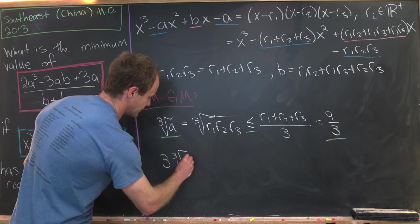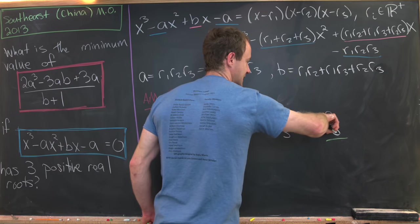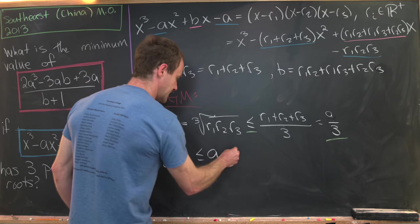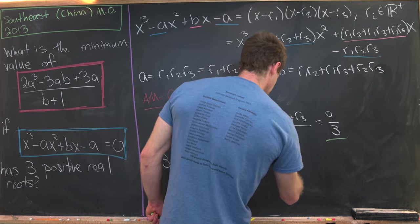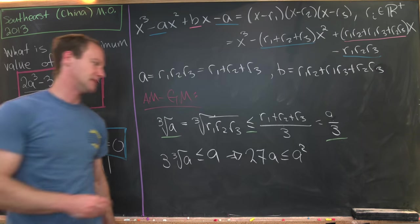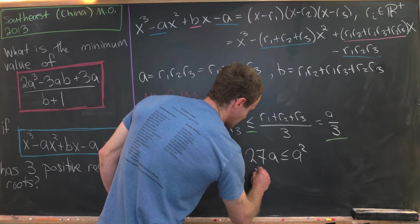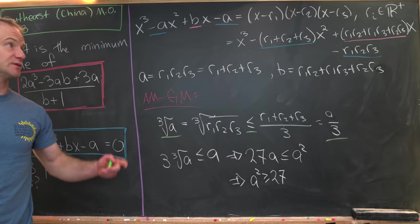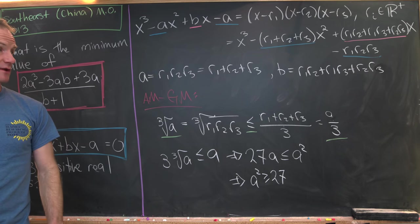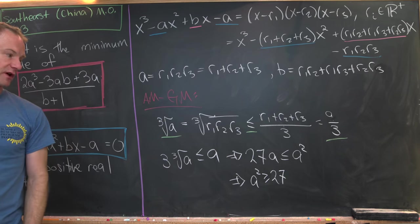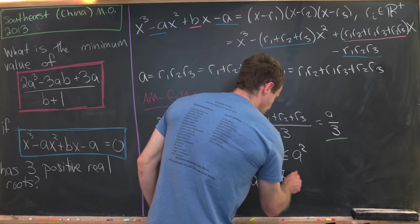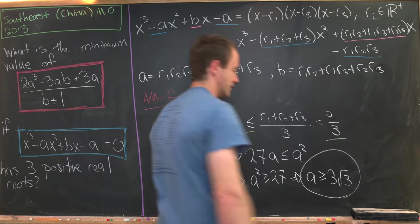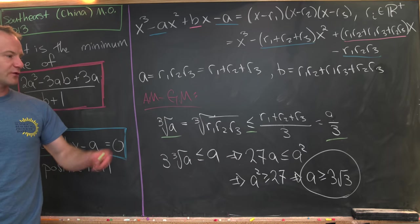So we have 3·∛a ≤ a. Cubing both sides gives 27a ≤ a³, and dividing by a (which is positive) gives a² ≥ 27. Taking the square root of both sides, we conclude that a ≥ 3√3.